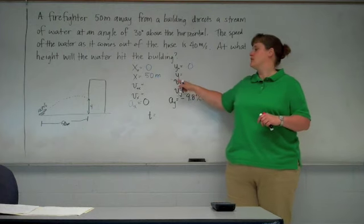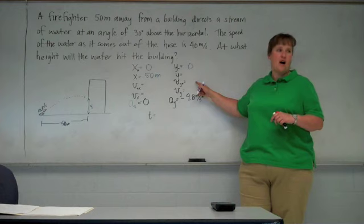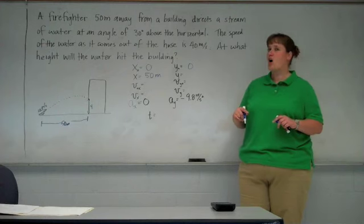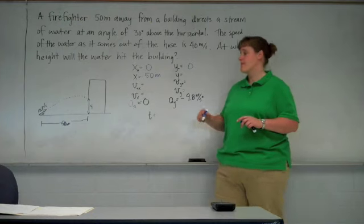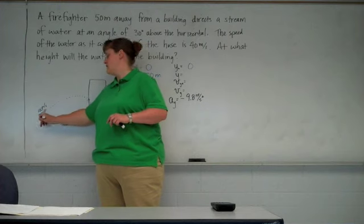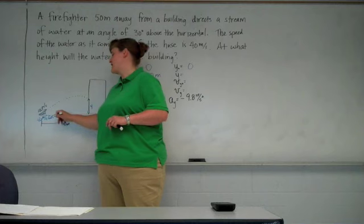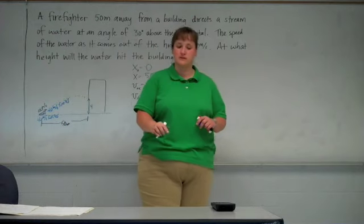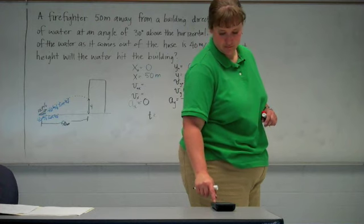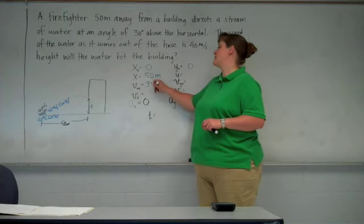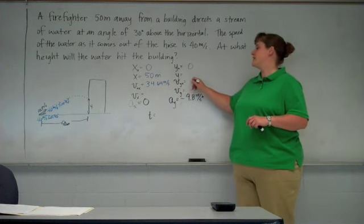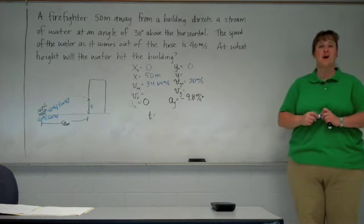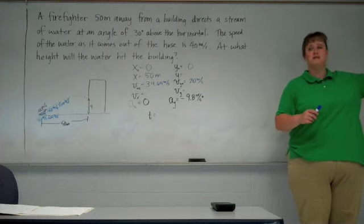Initial velocity. We need to find the x component of the initial velocity and the y component of the initial velocity. Initial velocity is 40 meters per second at an angle of 30 degrees. So, what's the x component? So, 40 meters per second times the cosine of 30 will be our x component. 40 meters per second times the sine of 30 will be our y component. So, our x component is 34.64 meters per second. Our initial y velocity is 20 meters per second. So, we have our components. Both of them are positive according to the way we've drawn our picture. The water is going to the right and up. So, both are positive.